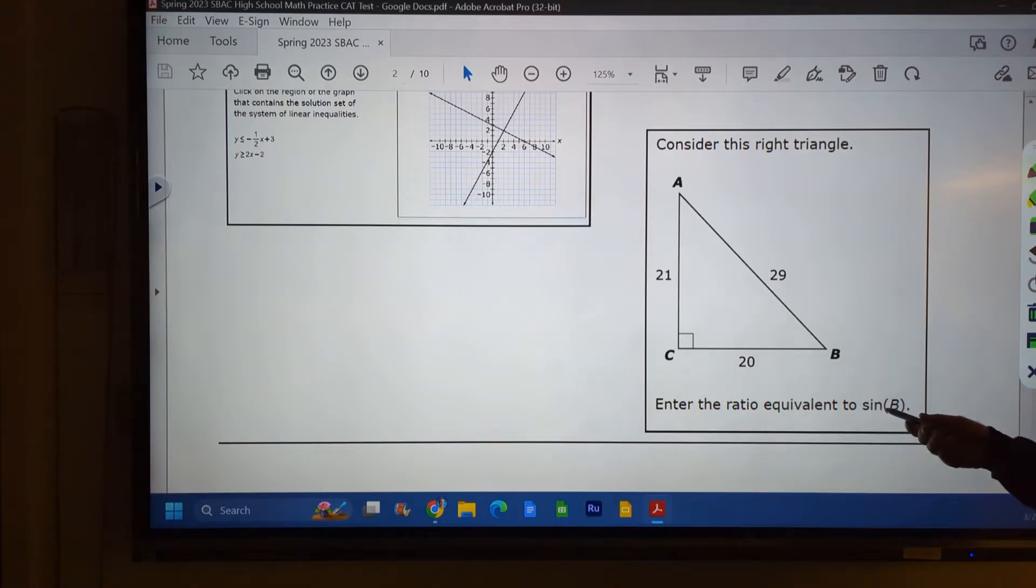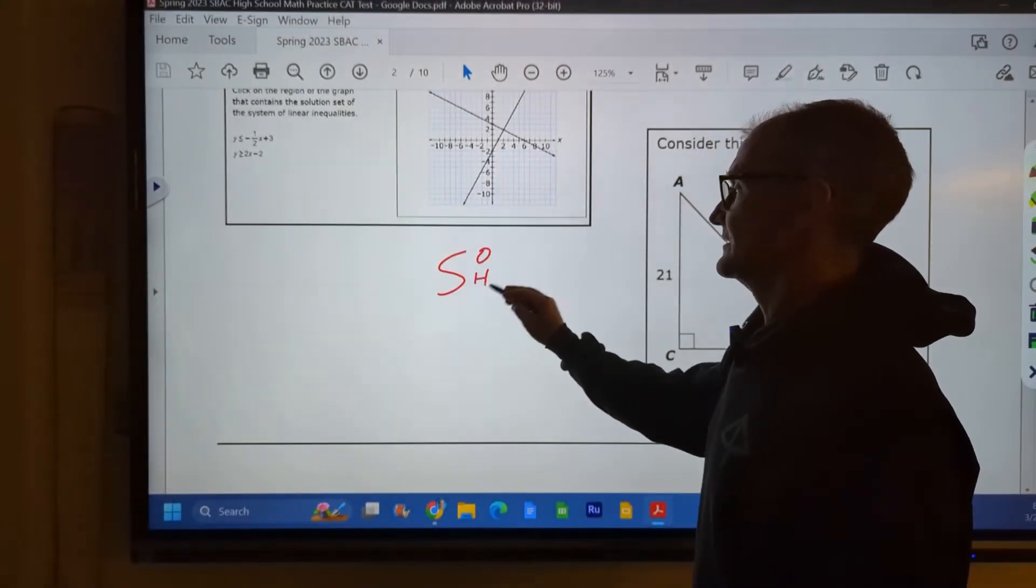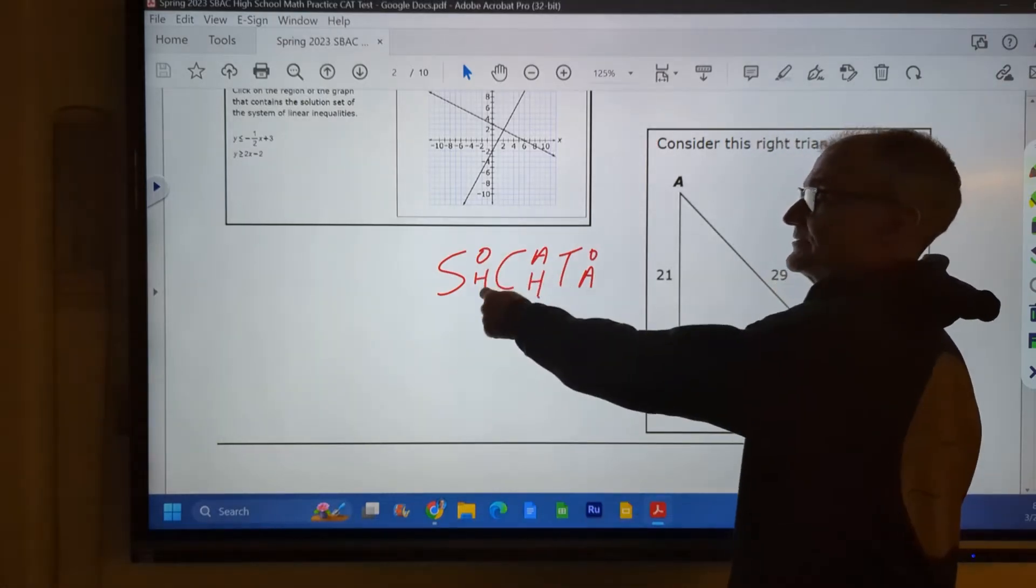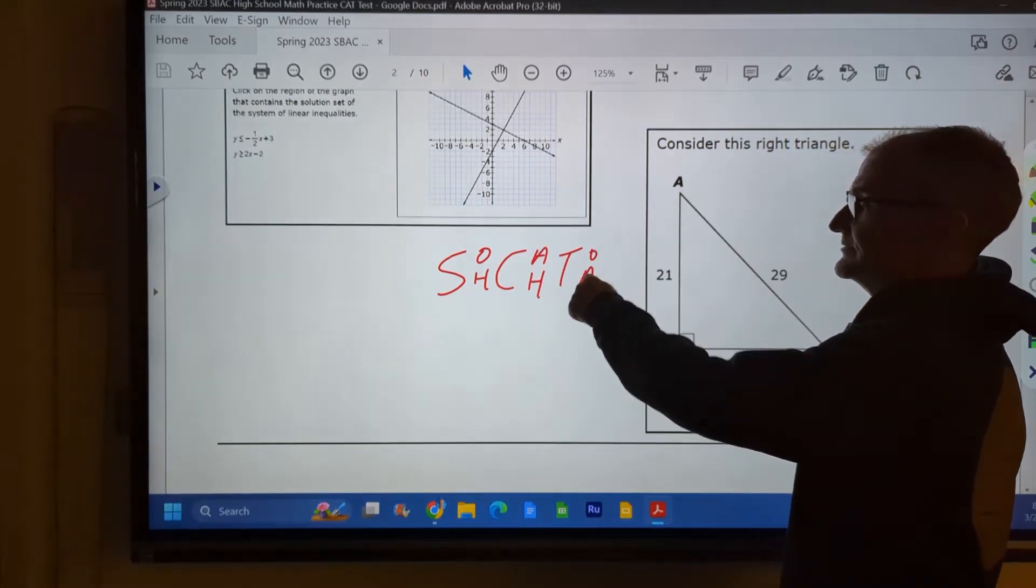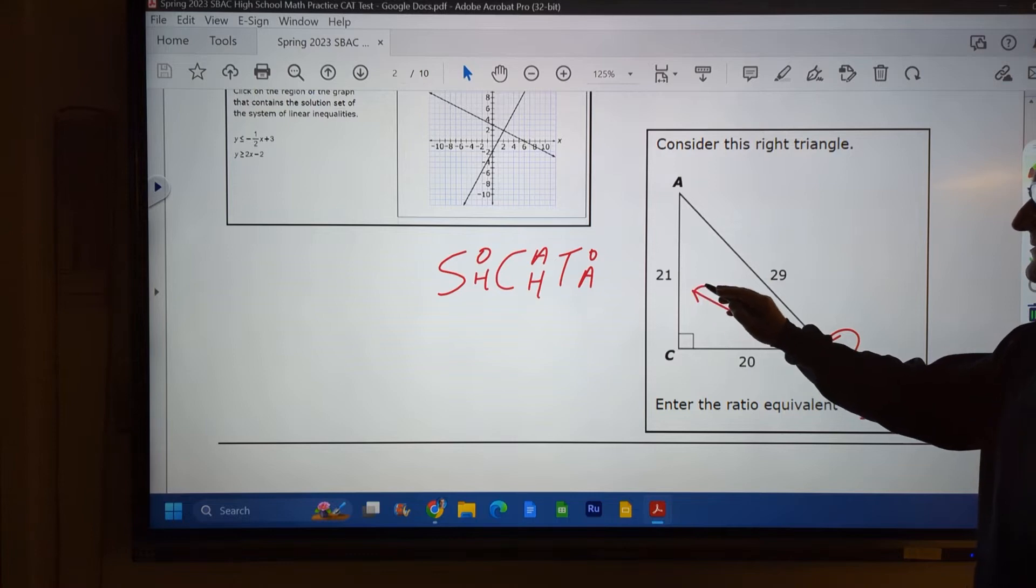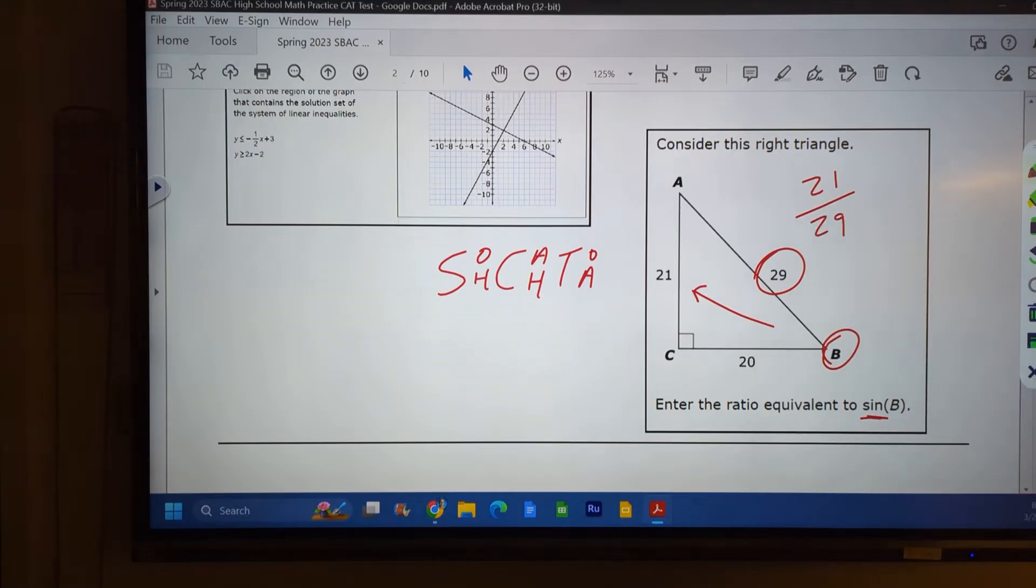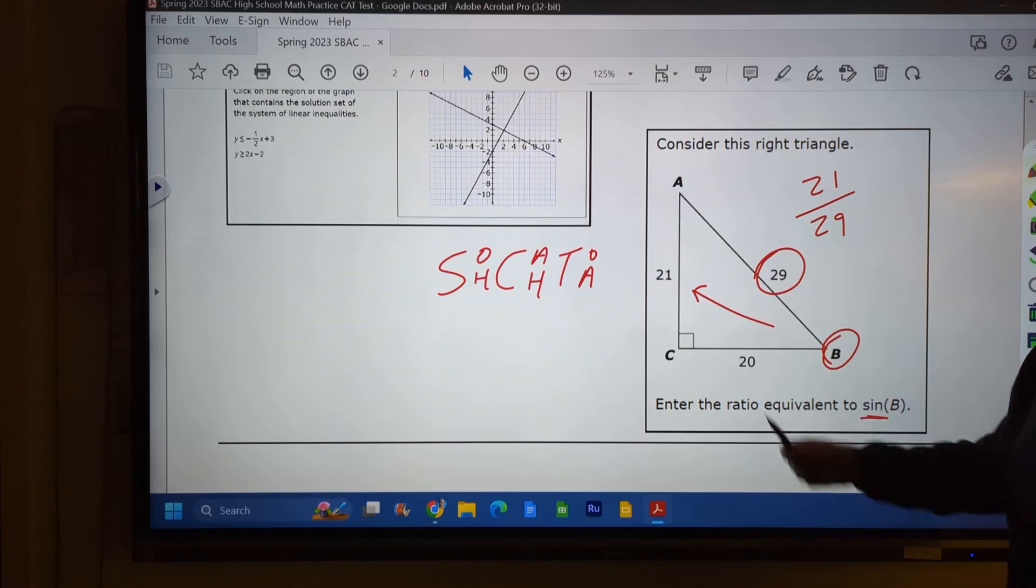All right, let's take a look at this triangle problem right here. Enter the ratio equivalent to sine of b. Well, the way I remember my three trig ratios is this right here. SOHCAHTOA. And that's a mnemonic device to remember sine is equal to the opposite over hypotenuse. Cosine is the ratio of the adjacent over hypotenuse. Tan, the ratio opposite over adjacent. So if we're talking about angle b right here and we're talking about sine, what is the ratio of the opposite over the hypotenuse? So opposite would be 21, hypotenuse 29, and that's the ratio equivalent to sine of b. This is a right triangle. I have two legs and one hypotenuse. Hypotenuse is always opposite the right angle.